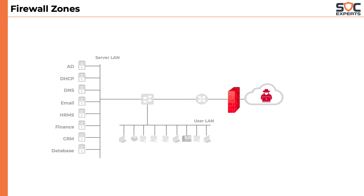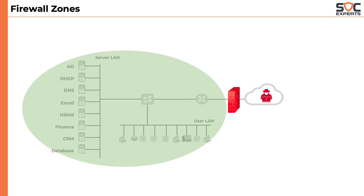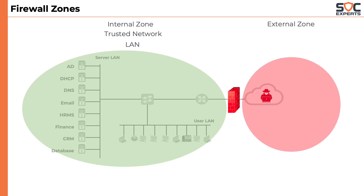By placing the firewall before the router, we could protect the entire company's network. Because firewalls are placed at the perimeter of the organization's network, it is sometimes referred to as a perimeter firewall or edge firewall. Each segment the firewall separates is called a zone. The organization network is called the internal zone, trusted network, or sometimes just referred to as LAN. The internet is referred to as the external zone, untrusted network, or WAN.